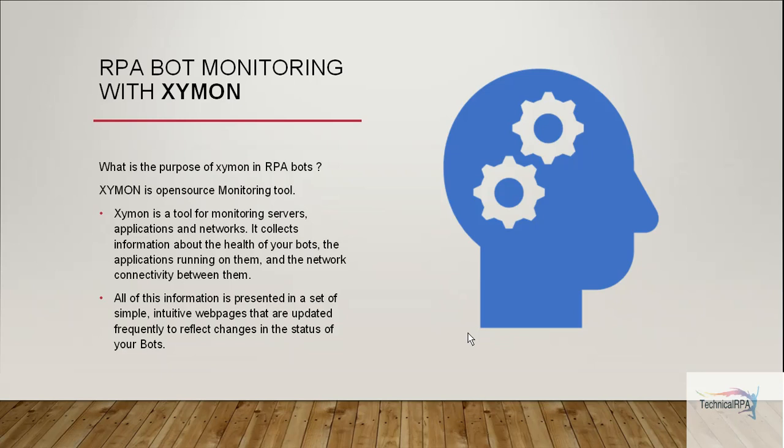As of now there is no concept of monitoring through any cognitive systems, so we are implementing bot monitoring through Xamon servers. When bots are deployed into production, we need to know what is running and what is alive. Each and every transaction — whether completed or if some problem happened — everything should be sent as a notification to the bot admin or business.